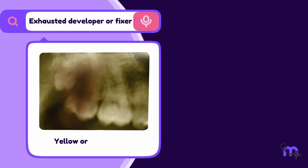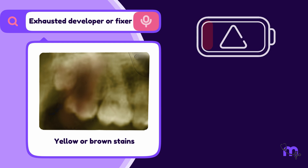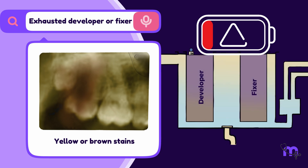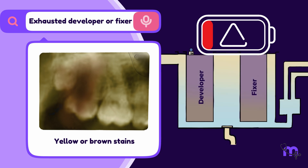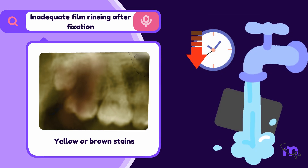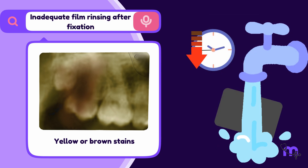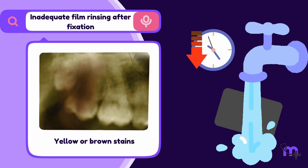Yellow or brown stain on the film is another common error. These stains arise from two main causes: using an exhausted developer or fixer, and not rinsing the film thoroughly after removing it from the fixer.